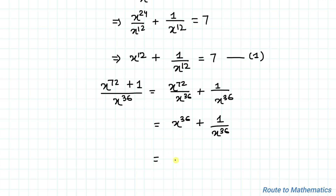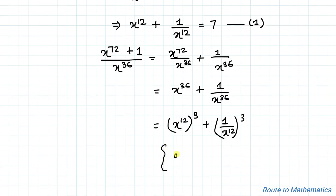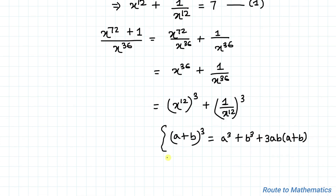We can write x to the power 36 as x to the power 12 whole to the power 3, since 3 multiplied by 12 is 36. So the expression becomes x to the power 12 whole cubed plus 1 by x to the power 12 whole cubed. We use the algebraic identity: a plus b whole cube equals a cube plus b cube plus 3ab multiplied with a plus b, which gives us a cube plus b cube equals a plus b whole cube minus 3ab times a plus b.